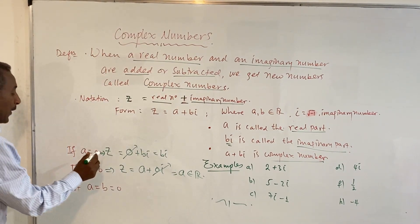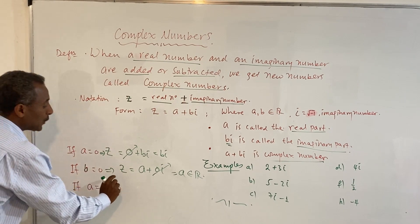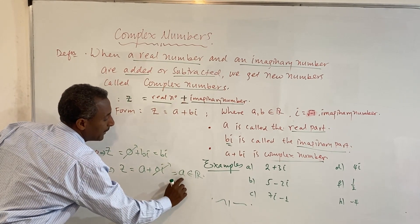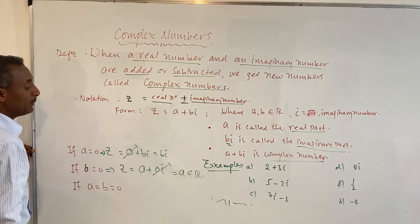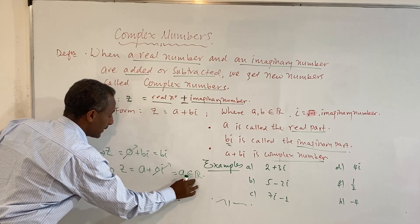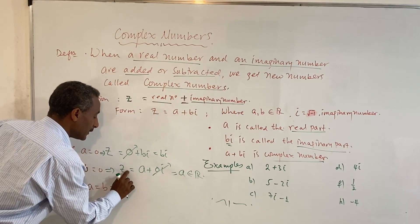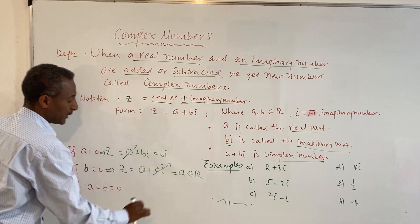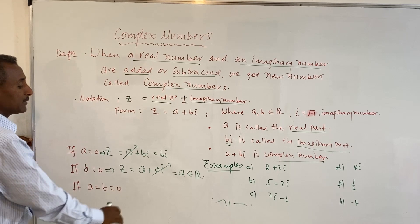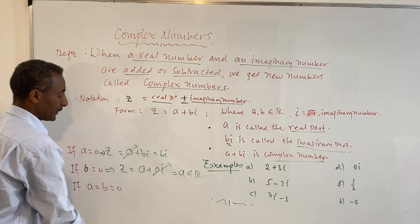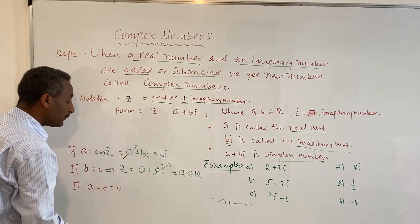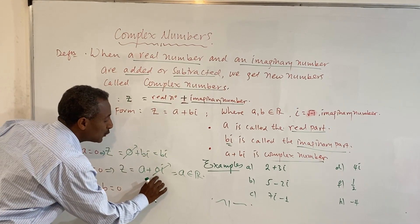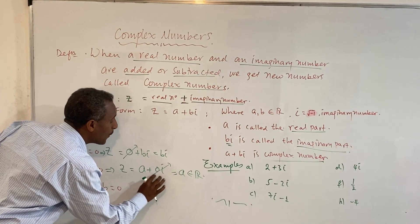When B is zero, our complex number becomes a real number. So any real number is a complex number with imaginary part zero.